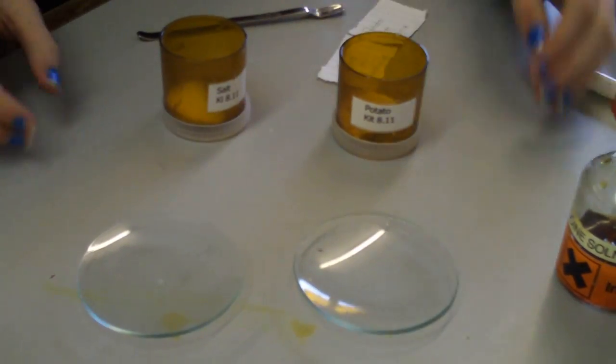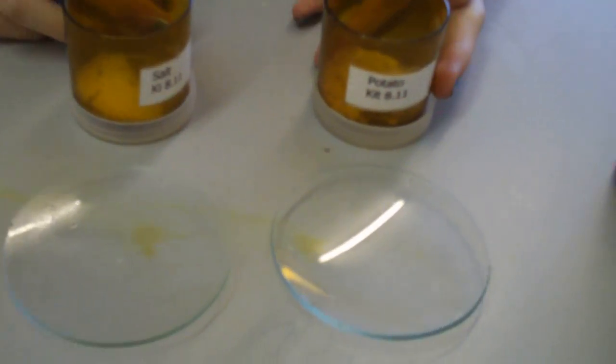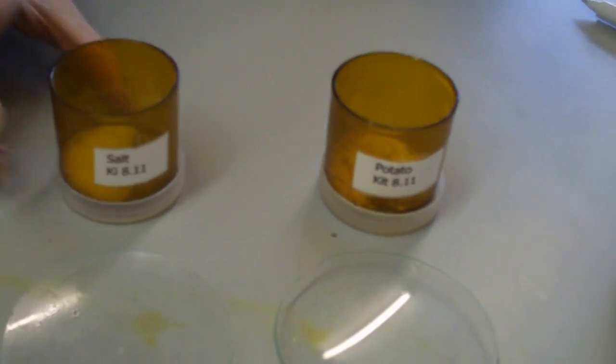The apparatus underneath is two watch glasses, two tubs of food, which are potato and salt, and iodine solution.